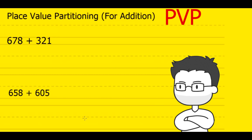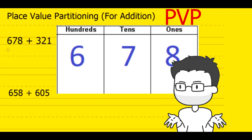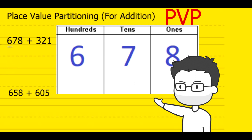Before we can go through the strategy, let's recap on some place value facts. Looking at the number 678, what would you say is the value of 6? You might be inclined to say it's 6, but that's wrong. Since 6 is in the 100's place, it's actually 600.